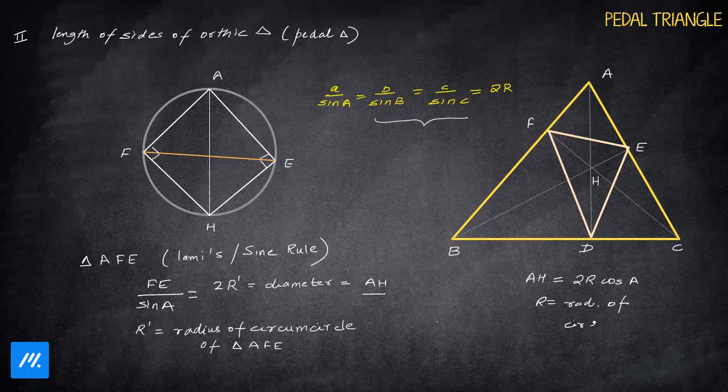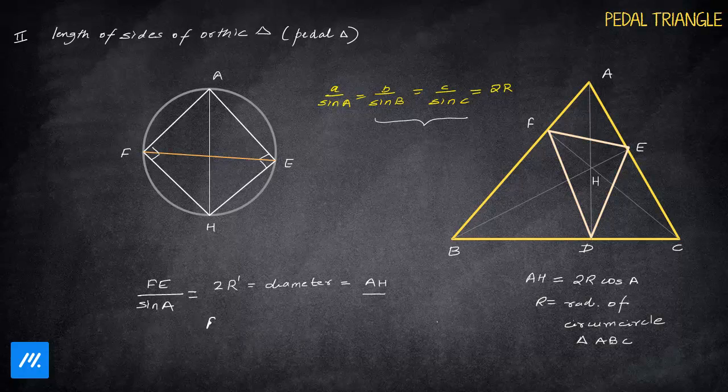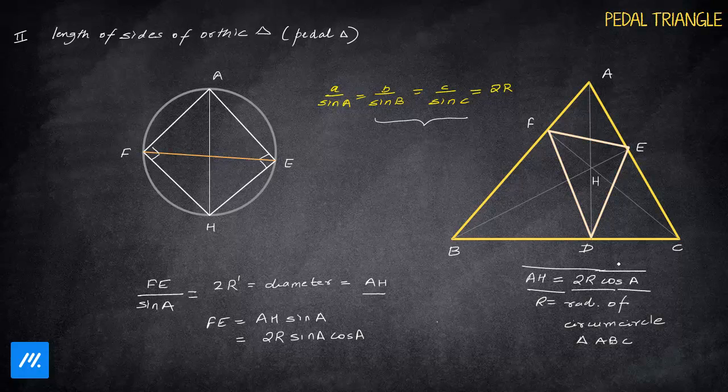So I'm expecting that you should remember this, though we can prove this. But if we prove it, it will be a bit out of scope. So AH is nothing but 2R cos A, where R is the radius of the circumcircle of the main triangle ABC. So now we know everything. We had to find FE. If we notice from here, FE is AH sin A. So putting the value of AH, it becomes 2R sin A cos A, which is R sin 2A.